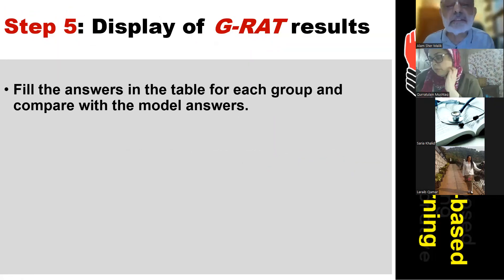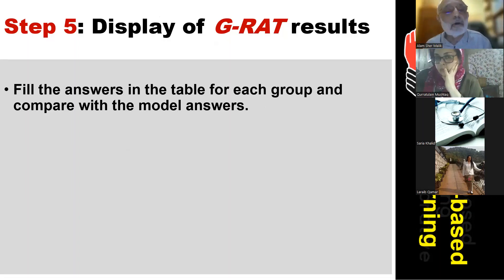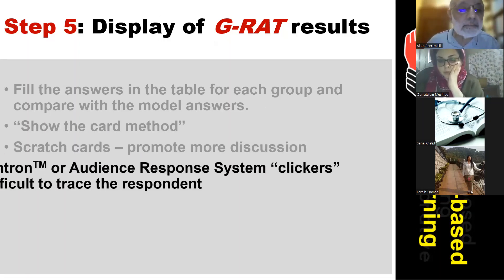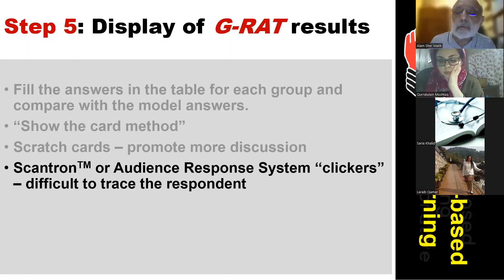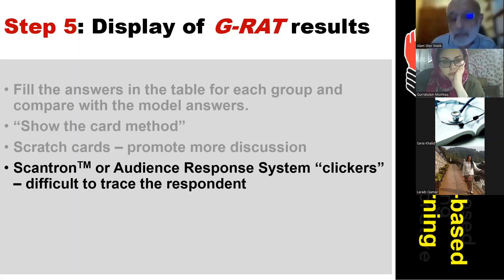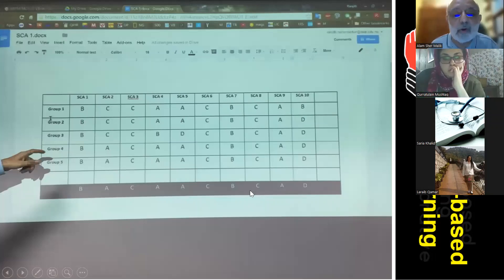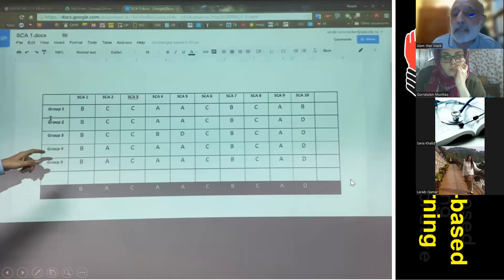The next step is to fill the answers into the table for each group and compare with the model answers. When all groups have done this, you put the answers in the table shown earlier. There are also other methods — electronic methods, scratch cards, clickers — but with those you may not know the respondent. The table shows teams, questions, model answers, and group answers, making it clear which questions students understood and which they found difficult.